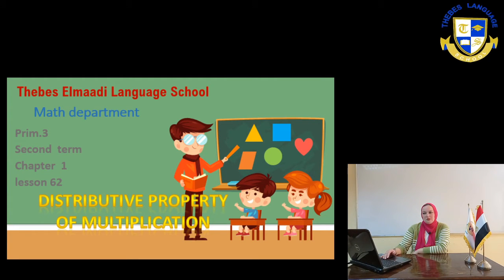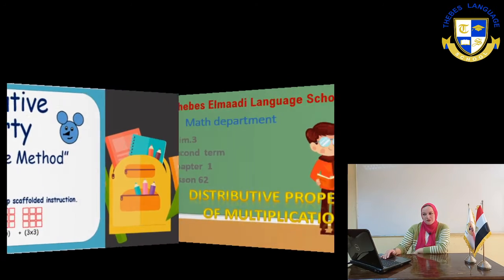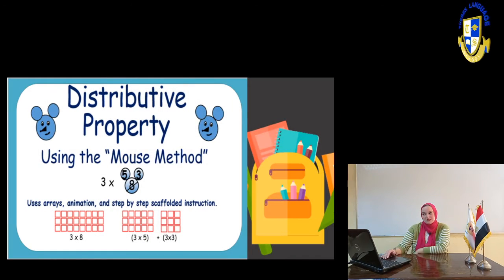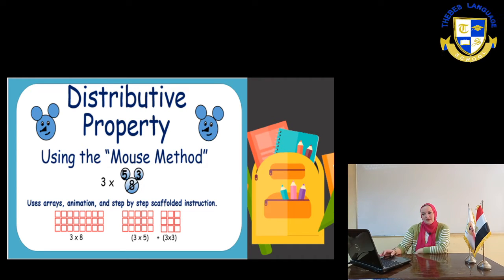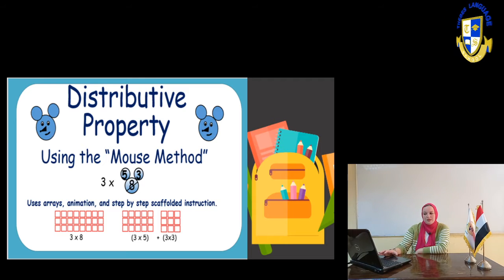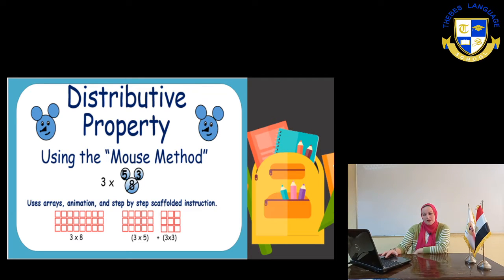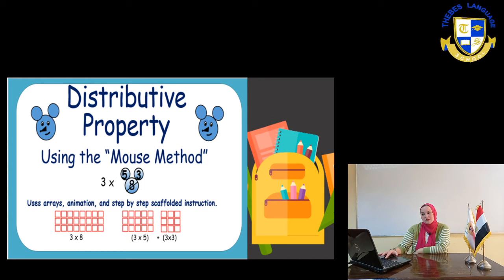Now we are going to take the distributive property using the math method. If we have 3 times 8, we are going to draw the 8 in one circle. 8 means 5 plus 3. Now we are going to use the array, animation, and step-by-step scaffold instructions.